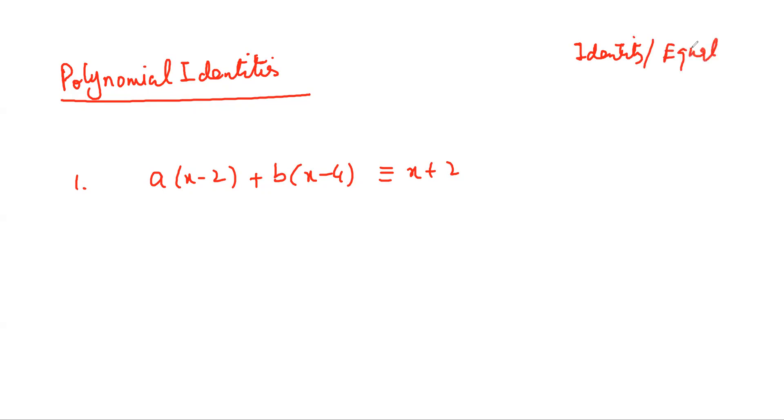An equation is solved and then we get the value or the values of X. While we can put any value of X into both sides of the identity over here.